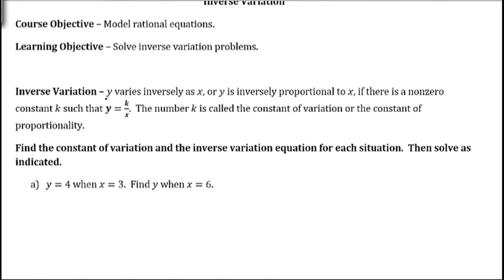Our statement here will be y varies inversely as x, or y is inversely proportional to x. And so the equation this time is going to be y equals k divided by x. Before, with direct variation, it was y equals k times x. With inverse variation, it's y equals k divided by x. So again, k is the constant of variation or the constant of proportionality.